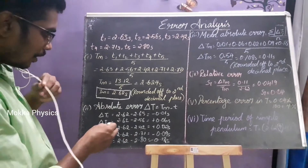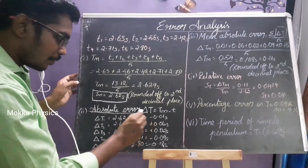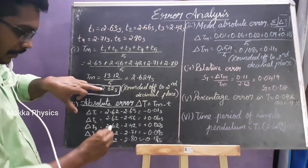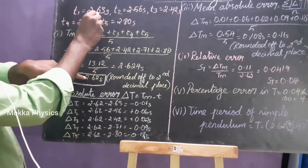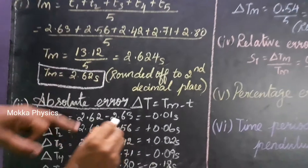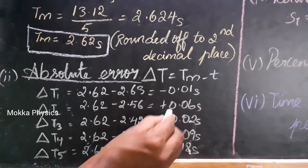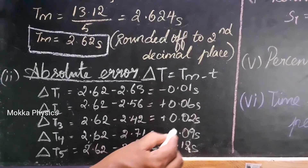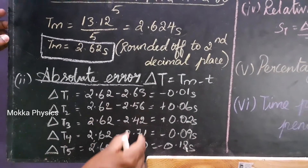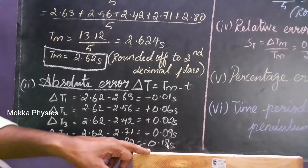In the first part, we calculate the absolute error. The true value is 2.62. For each individual value, we find the difference: minus 0.1, plus 0.6, plus 0.2 — all differences from the true value.